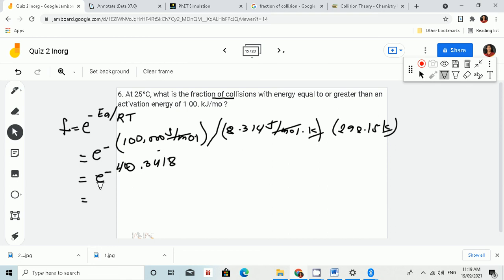So using our calculator, F is equal to 3.0 times 10 to the negative 16.